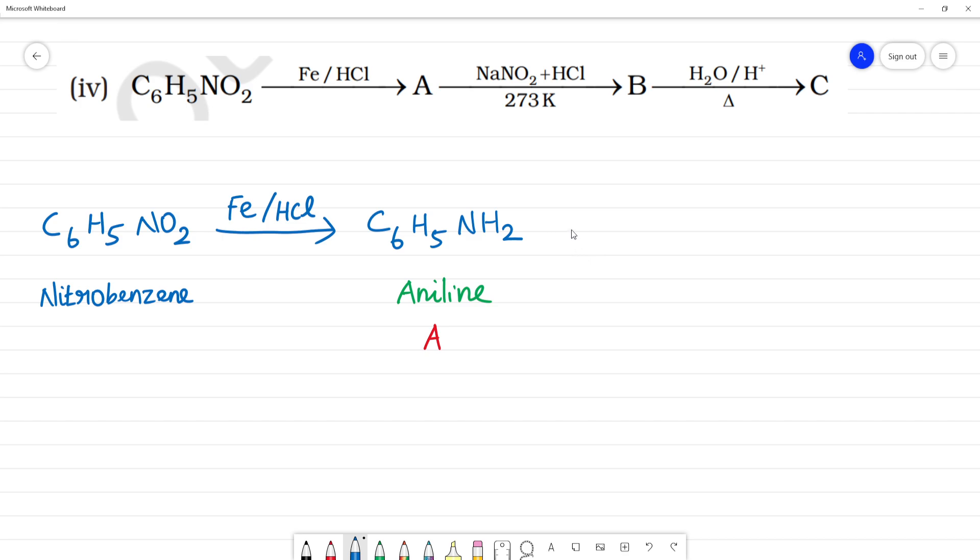NaNO2 plus HCl at 273 Kelvin forms benzene diazonium chloride, C6H5N2Cl. We will be getting benzene diazonium chloride.